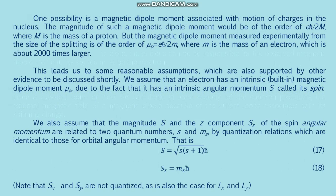One possibility is a magnetic dipole moment associated with motion of charge in the nucleus. The magnitude of such a moment would be of order eℏ/(2M), where M is the proton mass. But the magnetic dipole moment measured experimentally is of order μ_B = eℏ/(2m), where m is the electron mass, which is about 2000 times larger. Therefore the nucleus cannot be responsible for the observed magnetic dipole moment; its source must be the electron itself. This leads us to the assumption that the electron has an intrinsic, built-in magnetic dipole moment μ_s due to its intrinsic angular momentum s, called its spin.